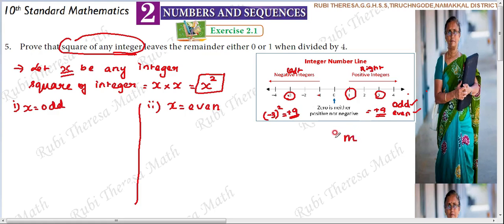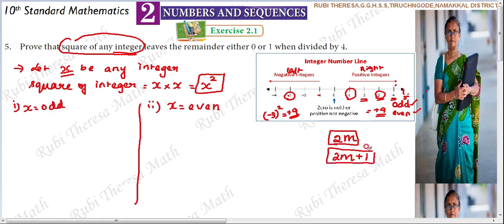Even numbers are multiples of 2 — any number multiplied by 2 will become an even number, so even numbers are divisible by 2. So to represent numbers: an even number is 2m, and the next number — the odd number — is 2m plus 1. So 2m is even and 2m plus 1 is odd.